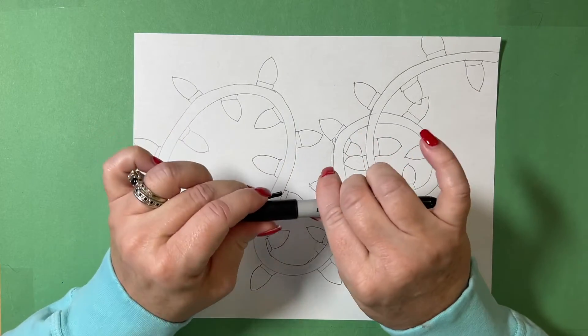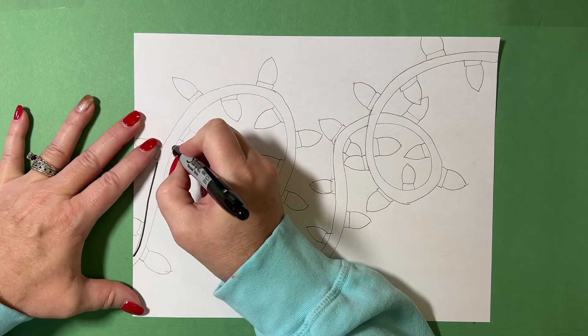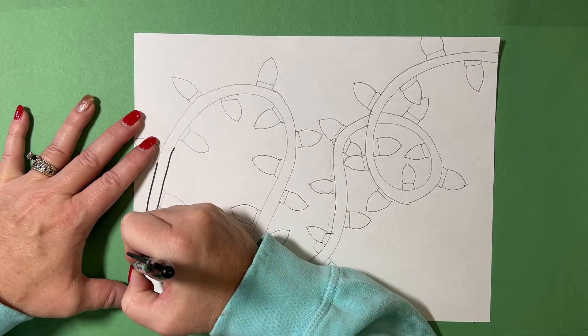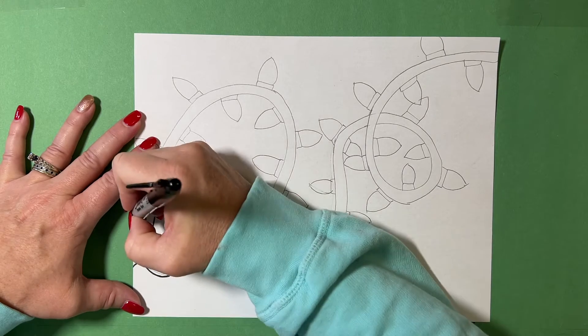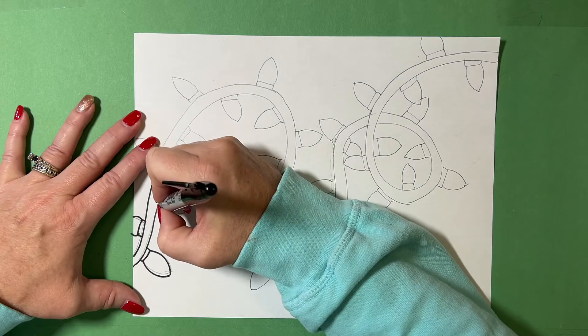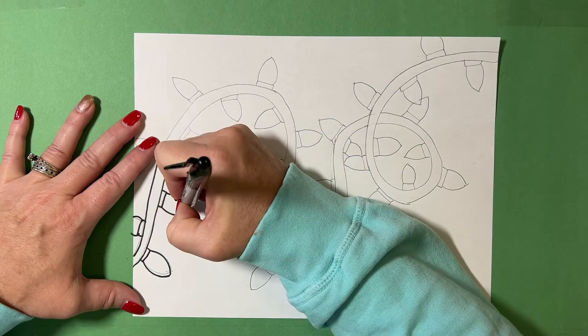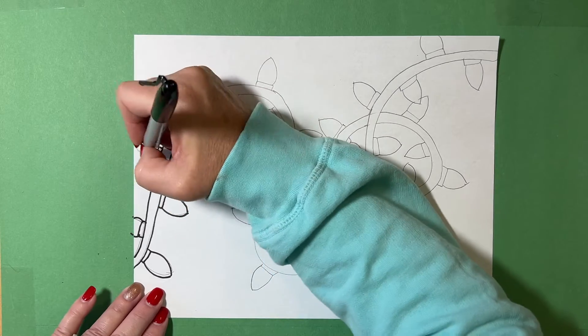Get your sharpie out and we are going to trace over all our pencil lines with a sharpie. So when you finish your pencil, get your sharpie out, trace over all your pencil lines with your sharpie. So I'm going to do that real quick and I'll see you back in my studio in just a few minutes.